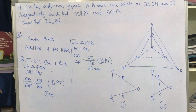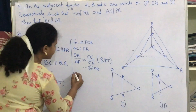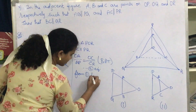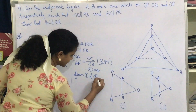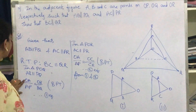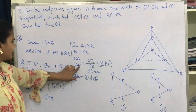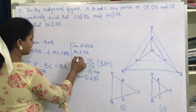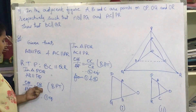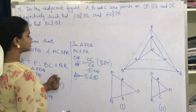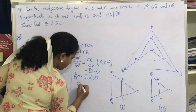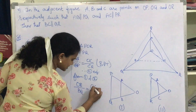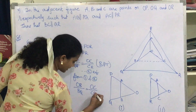From equations 1 and 2, since OA/AP is common to both, we can equate the remaining ratios. OA/AP gets cancelled, and we get: OB/BQ = OC/CR.